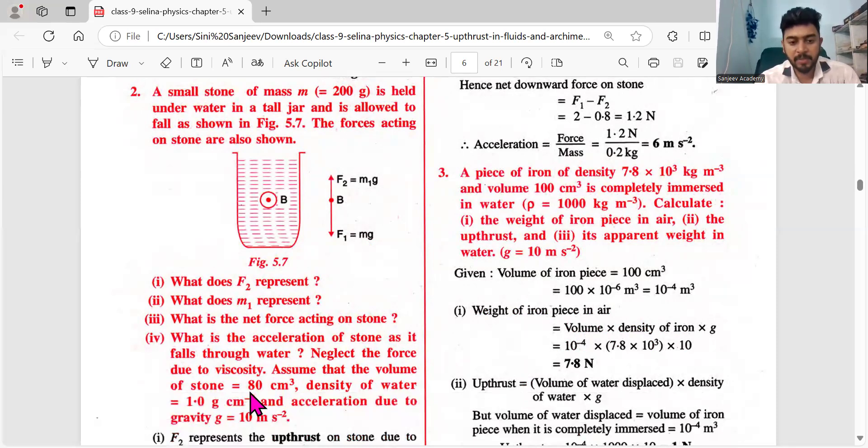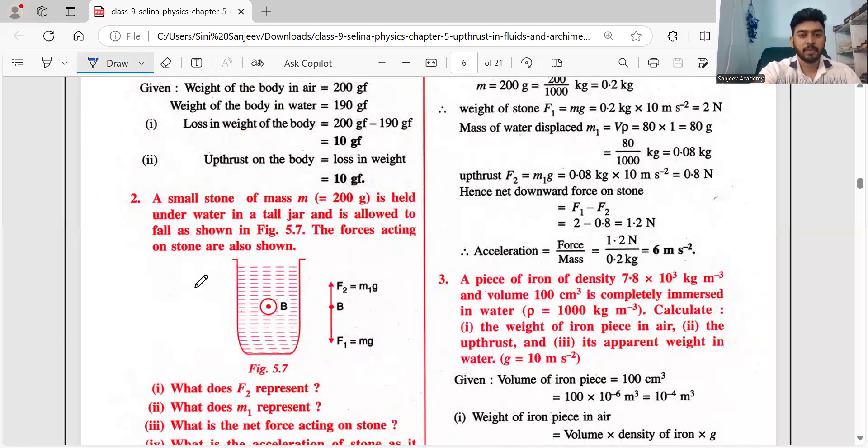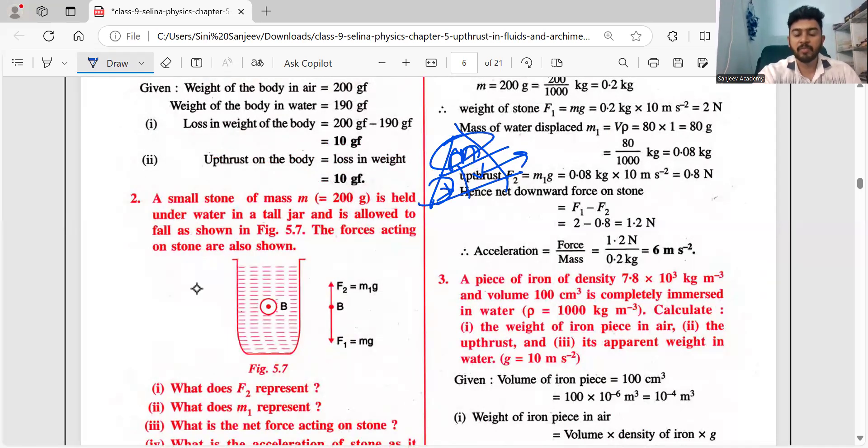Given the volume of the stone is 80 cm³, density of water and acceleration due to gravity can be used in direct substitution. Density is nothing but mass by volume. I'll just draw it for you - put D here, this is my M, this is my V. Density D is mass by volume, so mass is density into volume. The triangle will help you get it. Just remember what is on the top part of the triangle: mass. Other things you fill - D and V - you will easily get it.